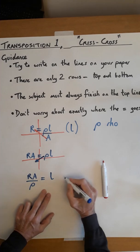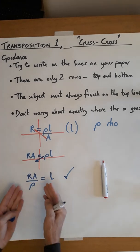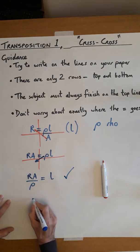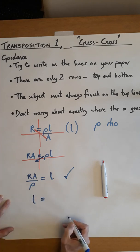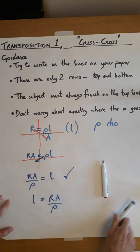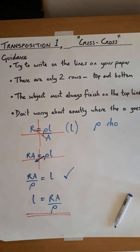Now, this is right. The problem is, it's sort of the wrong way round. When we write our formula, we tend to put the subject over on the left. L equals RA over ρ. So there is the answer. That's what we were aiming for.